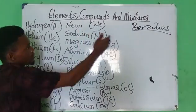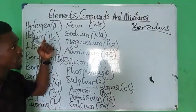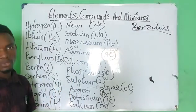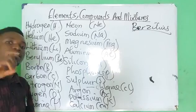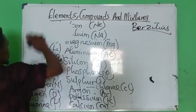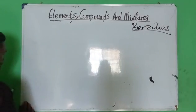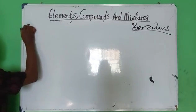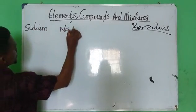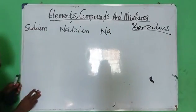These are the symbols used to denote each element. Some elements have different symbols from the way they are spelled because of their Greek or Latin name. For example, sodium's Latin name is natrium, and that is why it is denoted as Na.